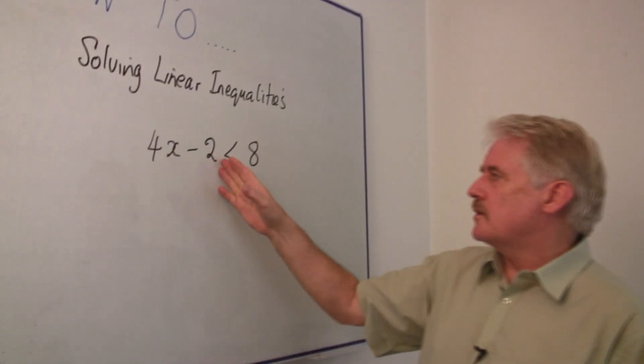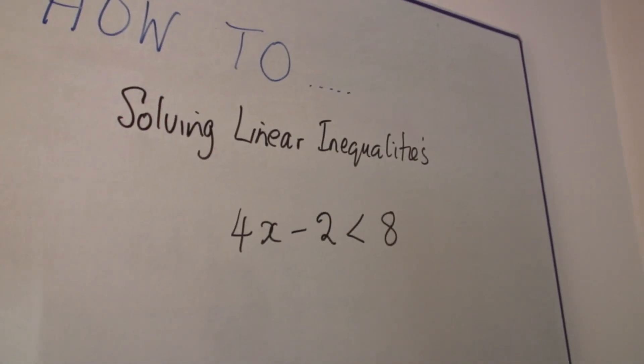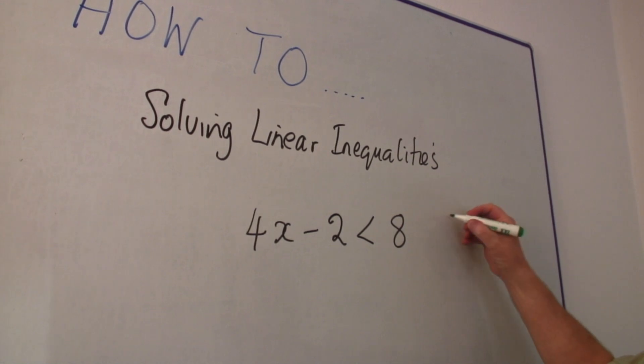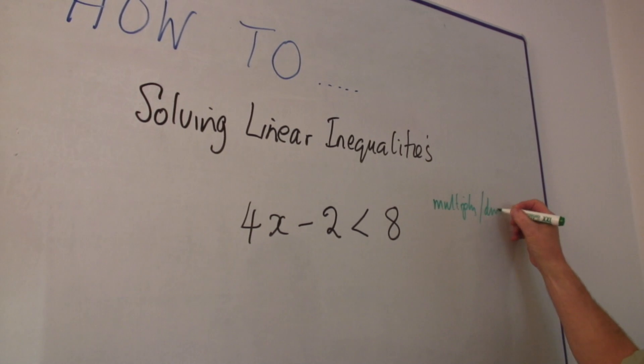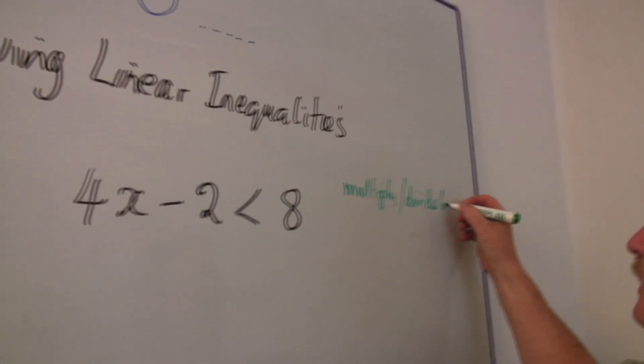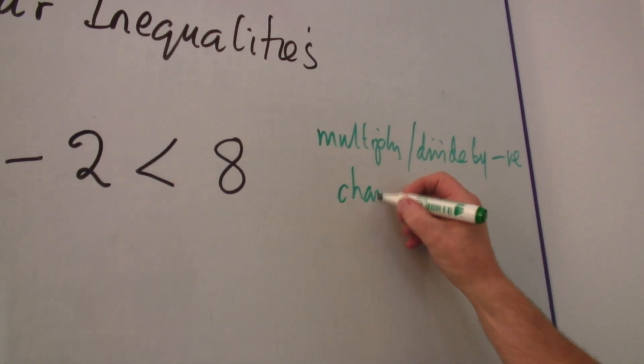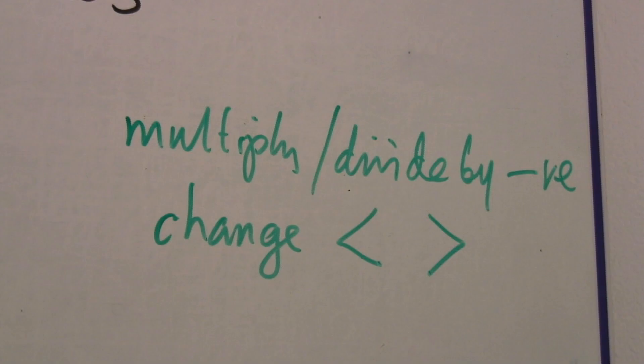Here we've got 4x minus 2 and it is less than 8. Just a warning: if we multiply or divide by a negative number, we must change that less than to greater than, or vice versa. Just a little one to remember, because this is something that people do and then they suddenly find they got the wrong answer and don't know why.